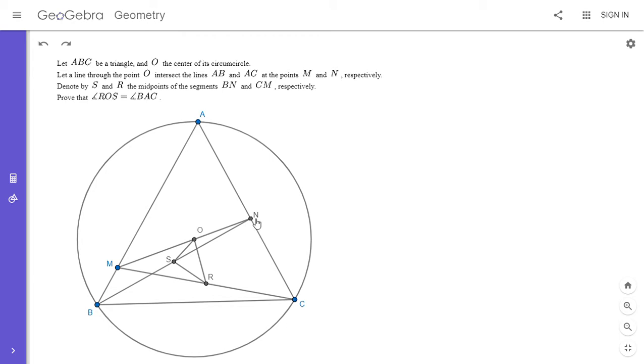Whenever you have lots of midpoints, it's often a good idea to try to use the gliding principle. I'd like to use the gliding principle on triangles AMN and ROS.